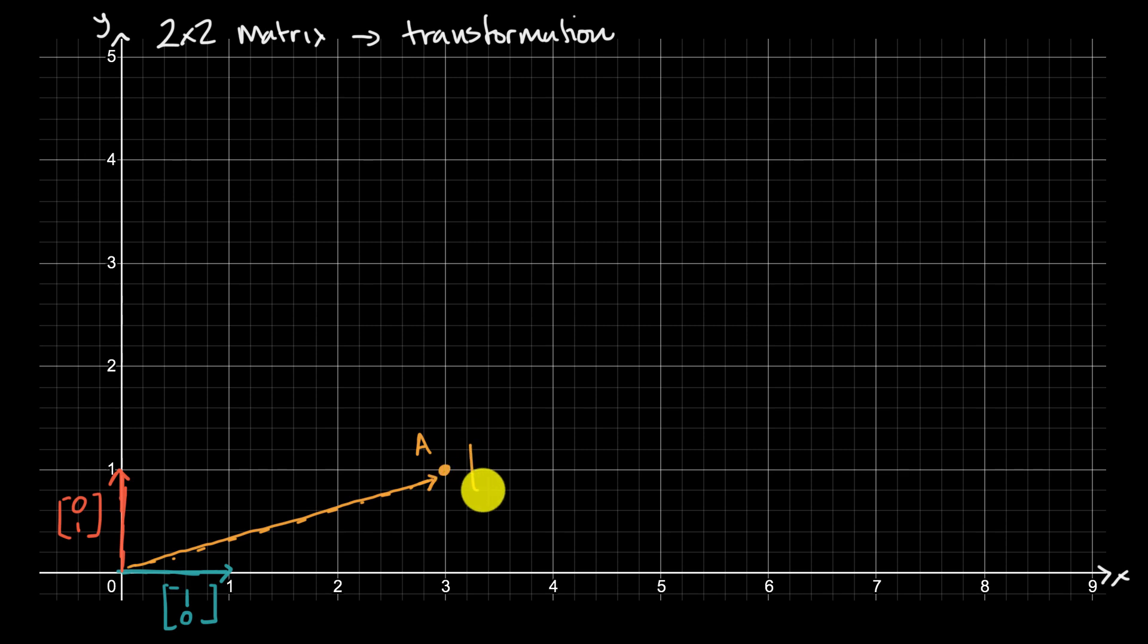But if we wanted to express it in terms of a vector, we could write it as [3, 1]. The x-direction, we're moving three from the origin, positive three. And the y-direction, we're moving one to get there. And you could see that we can represent this as a weighted sum of these two vectors.